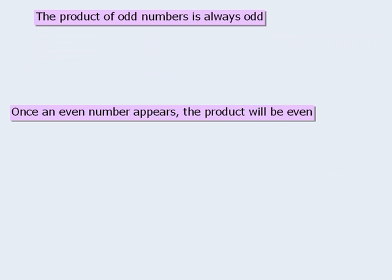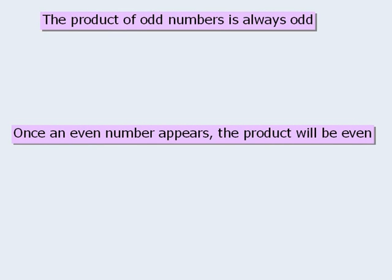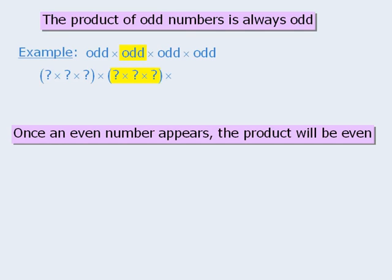Let's take a closer look at these two rules using prime factorization to show why they work. The first rule says that the product of any number of odd integers will always be odd. For example, let's find the product of four odd integers. We'll take each odd number and find its prime factorization. Since each number is odd, none of their prime factorizations will include any 2s. Therefore, the entire product does not include any 2s, so the product must be odd.